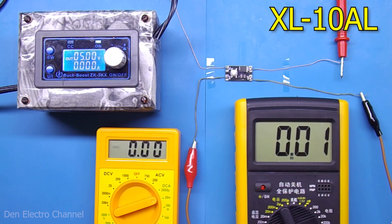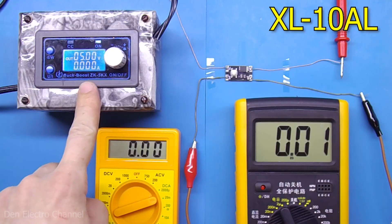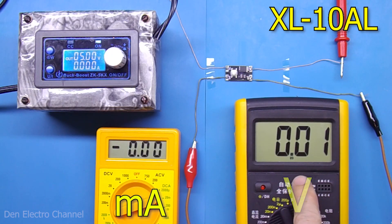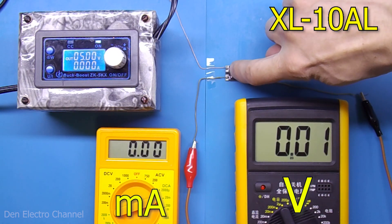To test the module, I put together a small circuit. I powered them from this converter. This multimeter will show the current consumed by the modules, and this one will show the output voltage. At first, I wanted to see if the modules actually consume nano and microamps when turned off. But it turned out that my multimeters simply cannot measure such a microscopic current.